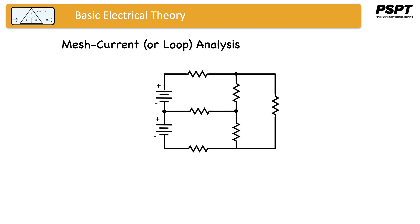Mesh current or loop analysis, by virtue of its name, analyzes a circuit that looks essentially like a mesh, and a mesh has several loops in it. In this case, this particular example has three loops in it, and we are going to call them loop number one, loop number two, and loop number three.